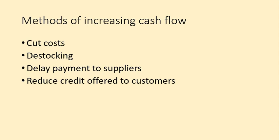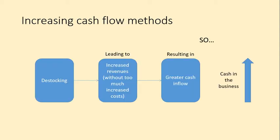You could also reduce the credit offered to customers — the opposite of delaying payment to suppliers. You might normally give a shop 30 days to pay for clothes they're going to sell; you could reduce that to a week or less. When thinking about methods for increasing cash flow, destocking is a good way to get rid of existing stock and sell it for money. This leads to increased revenue without the usual corresponding increase in costs.